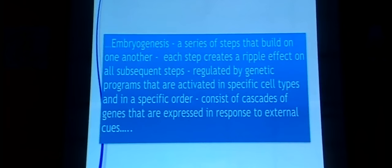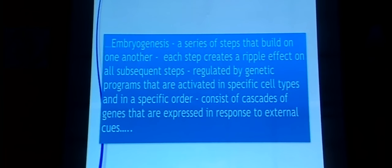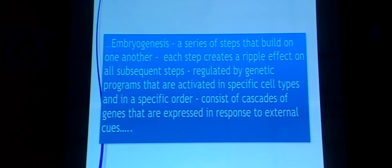In summary, embryogenesis consists of a series of steps that build on one another, each creating a ripple effect on subsequent steps. The whole process is regulated by genetic programs activated in specific cell types and in a specific order, consisting of cascades of genes expressed in response to external cues. The specialty of fetal medicine has evolved because of research in this area, and the entire process is still not completely understood.